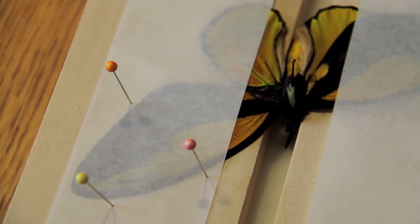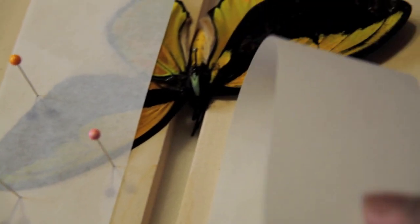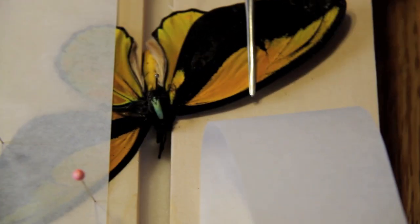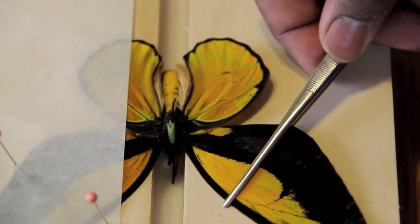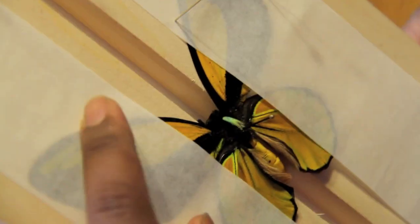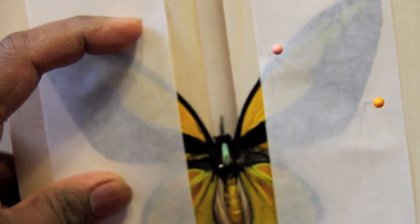Once that wing is secured, now I'm going to go to this wing and secure it. Again, the same thing, I go to the costal margin, I push it up, and then I have a good look to see if both wings are perpendicular to the body, which they are.